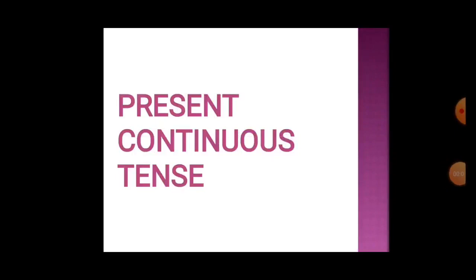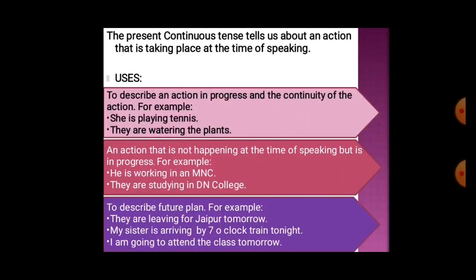Now let's see present continuous tense. Present continuous tense tells us about an action taking place at the time of speaking. It is used to describe an action in progress and the continuity of the action. For example: she is playing tennis; they are watering the plants — here the action is continued. It is also used for an action not happening at the moment of speaking but still in progress, like: he is working in an MNC; they are studying in DN College.